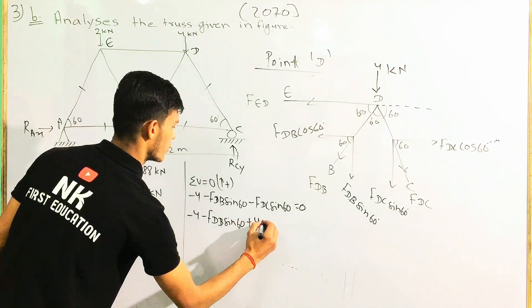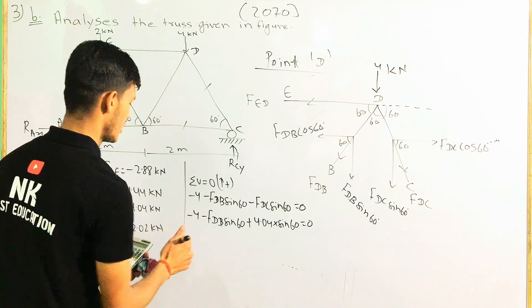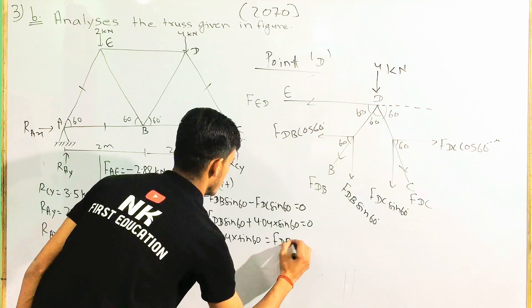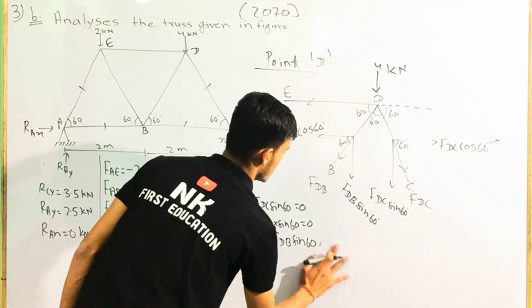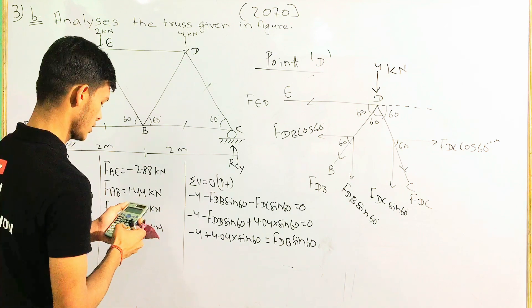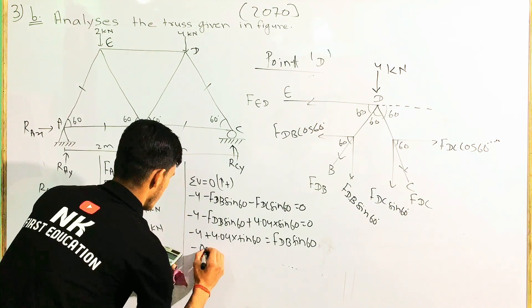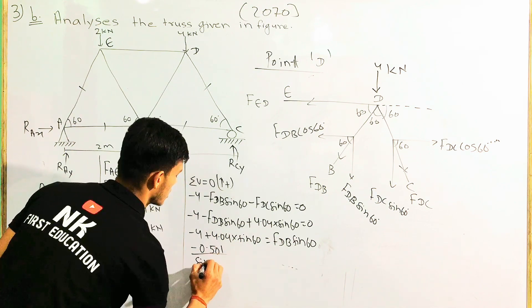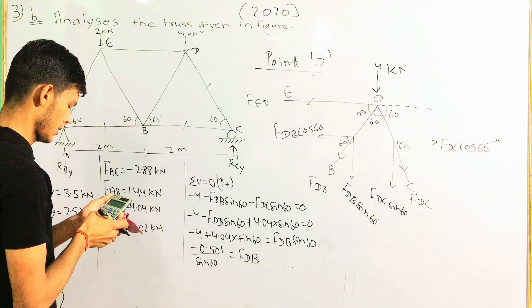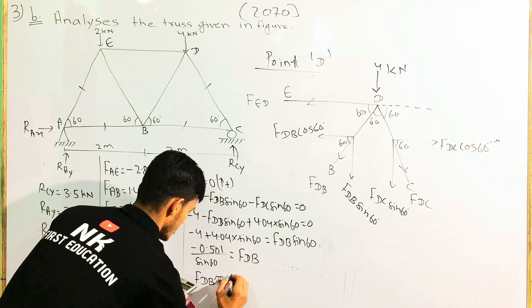Db is equal to: fdv sin 60 degrees minus u, minus cd u plus 4.04 into sin 60 equal to z. Minus 4 plus 4.04 into sin 60 degree, minus 4.04 into sin 60 degree, minus size, minus last magnitude side 0.501.